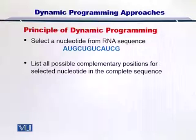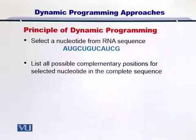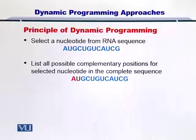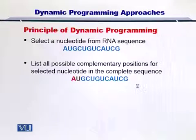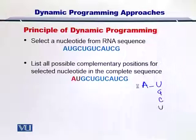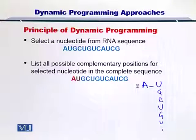In dynamic programming, we begin by listing all possible complementary positions for a selected nucleotide in the complete sequence. In the example we are discussing, the first two nucleotides can form a hydrogen bond. The RNA structure that can be formed will have A bonded with U, and then G, C, U, G, U, and so on. In this case, there is only one bond that we are considering.